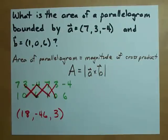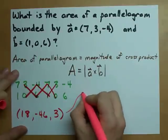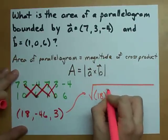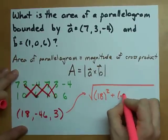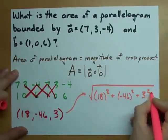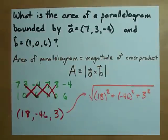Now, all I need to do is find the magnitude of it. You guys remember how to do that? It's the square root of each of those components squared. Components may not have been the word I was looking for, but whatever. Sue me. 18 squared plus negative 46 squared plus 3 squared. Then, you take the square root of all that.